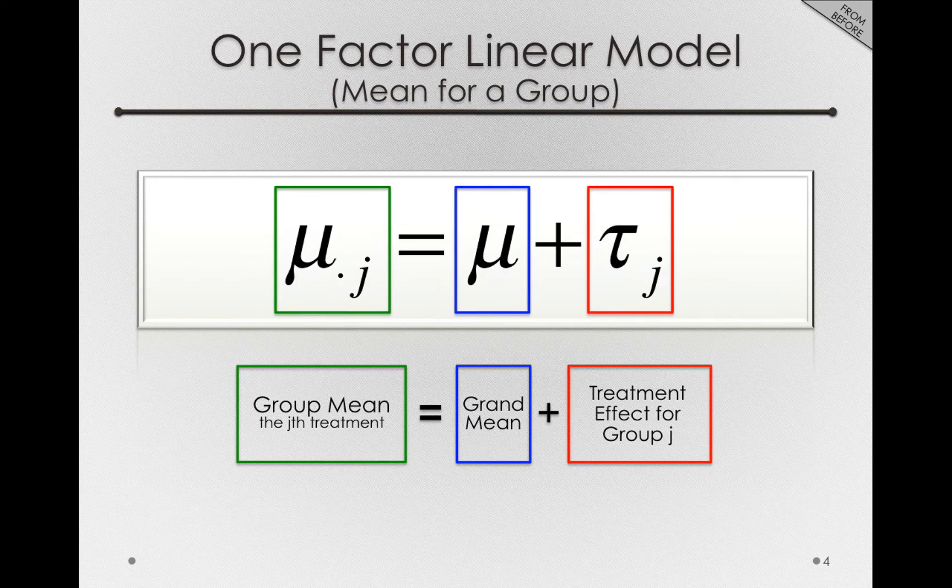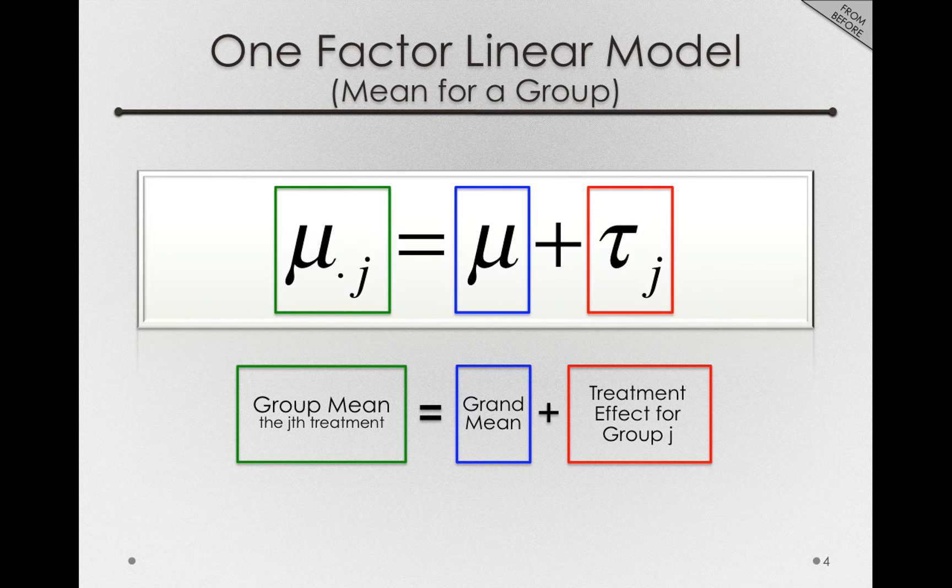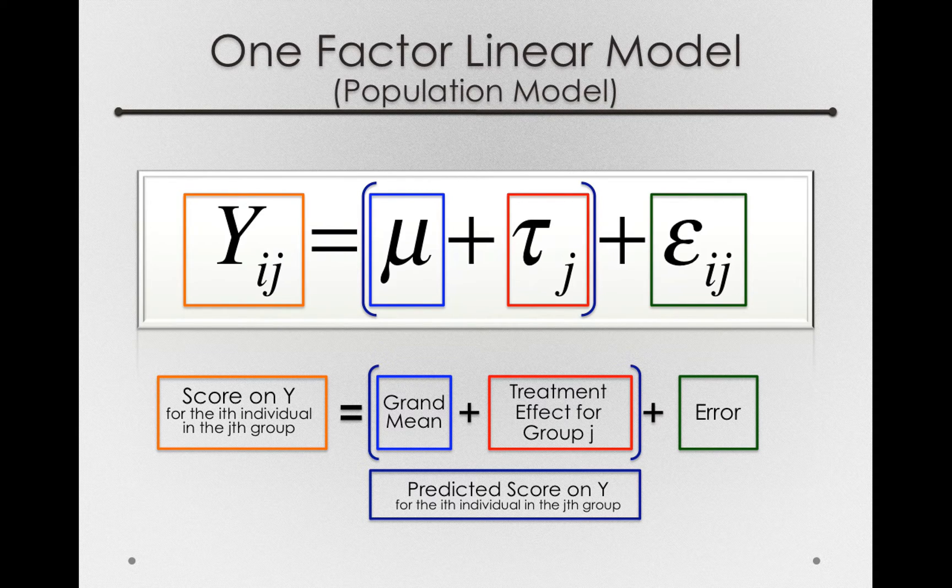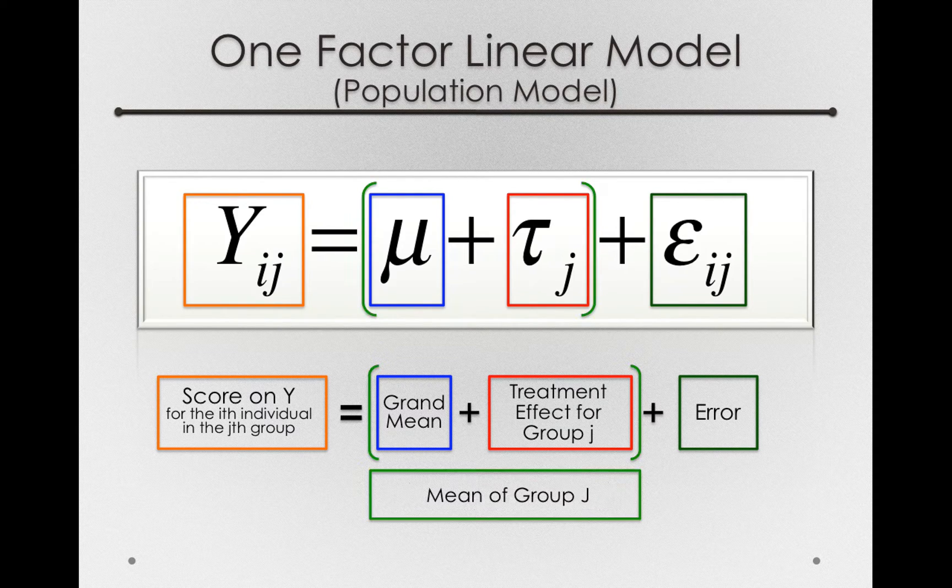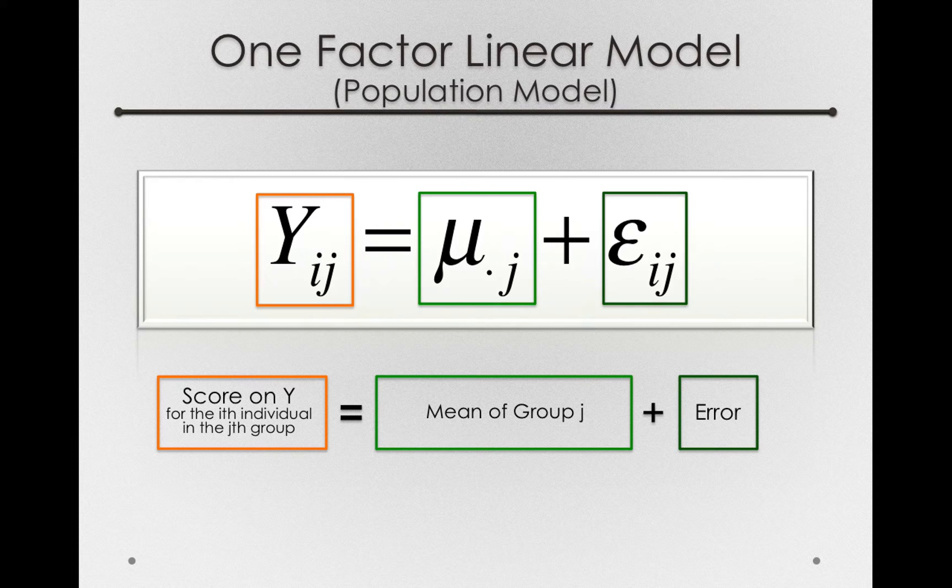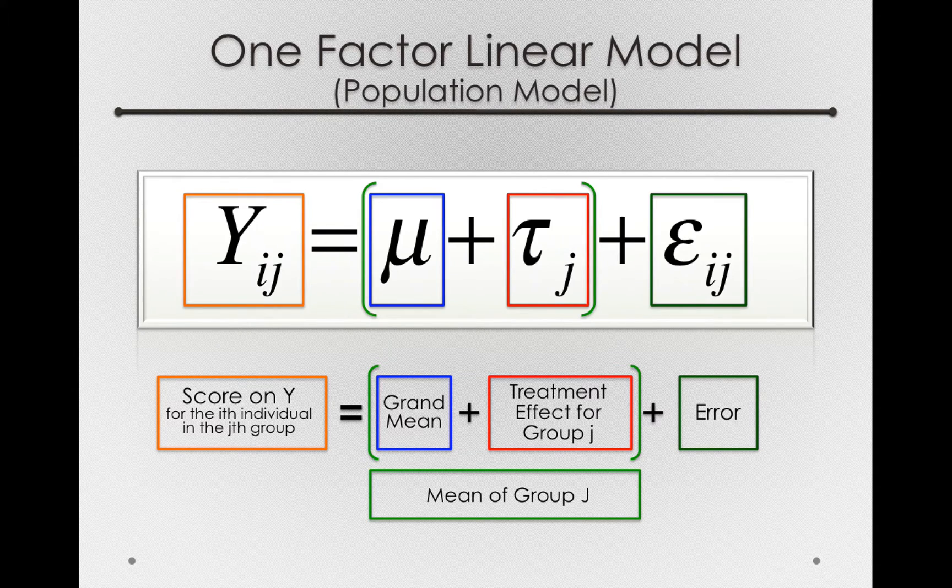So the prediction for any person is really just the group mean that that person is a member of. In this case, we pick up some additional notation, the μ_·j. The dot here is just bookkeeping to show that we've taken an average over individuals. We could also describe this model as a score on y for an individual is simply the mean of the group they're a member of, plus that individual error.